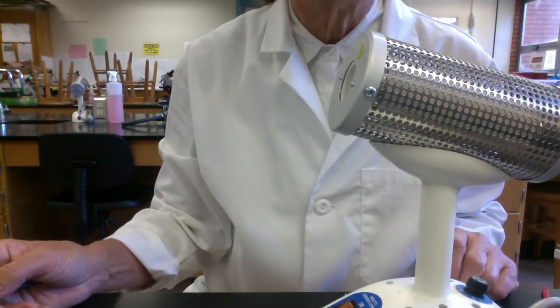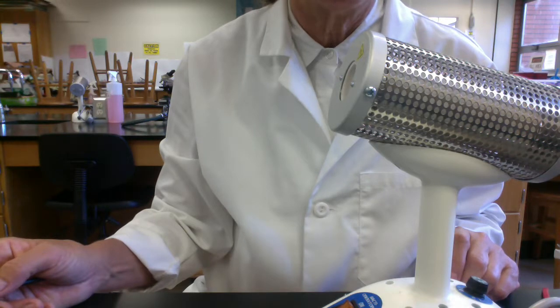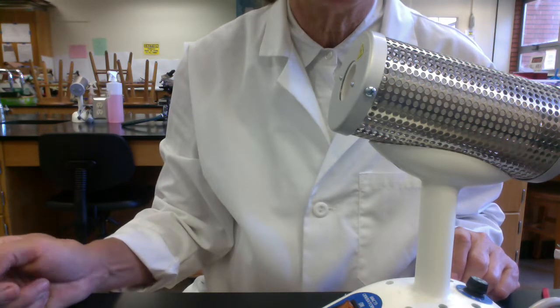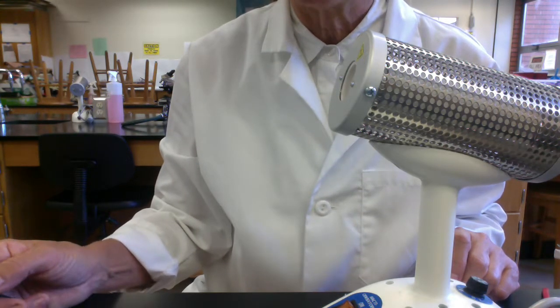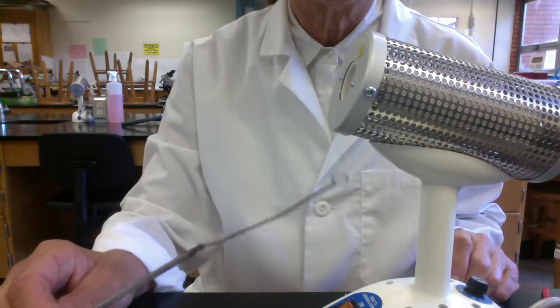When you are transferring microbes and you don't want them contaminated with unwanted environmental microbes, we often use transfer instruments. The one I like the best is called the inoculating loop. You can see it's just a wire that's been twisted into a loop.